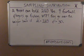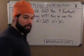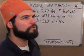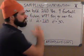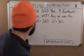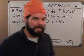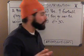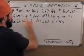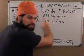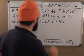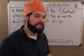Sampling distribution for X-bar. A boat can hold a little bit over a ton — 2,000 pounds. It can hold 2,160 pounds. Nine football players are going on a fishing trip. You want to know: what's the probability that they go over the weight limit for the boat, if the average football player weighs 220 with a standard deviation of 30.